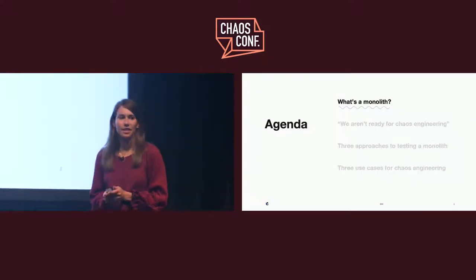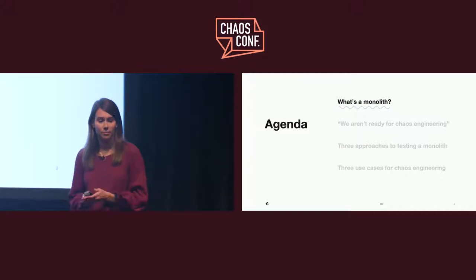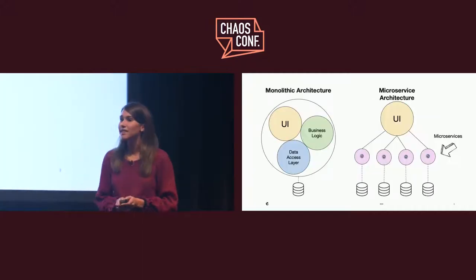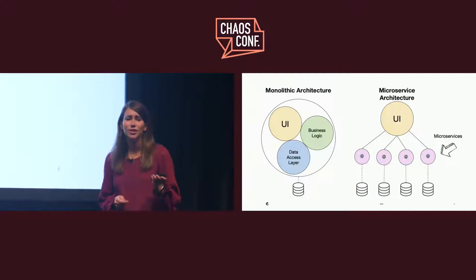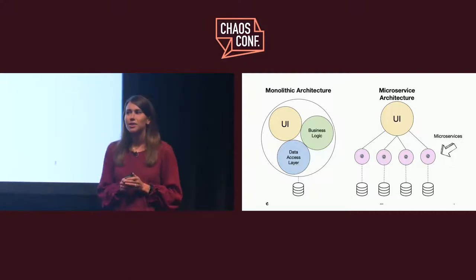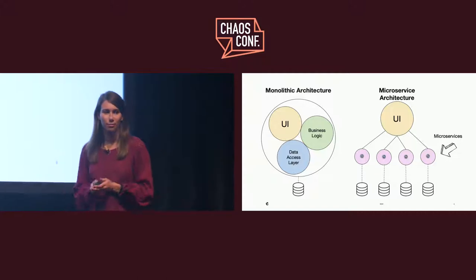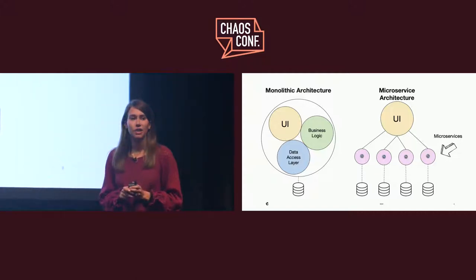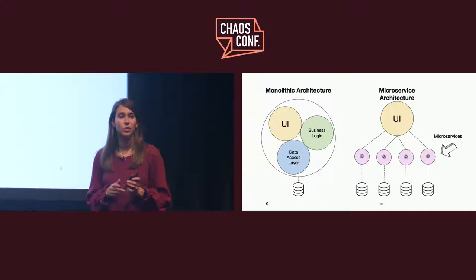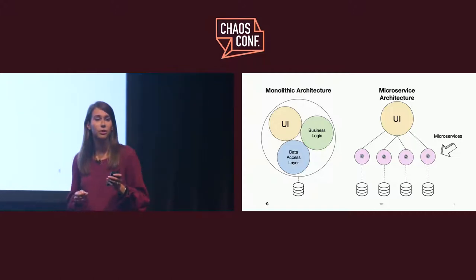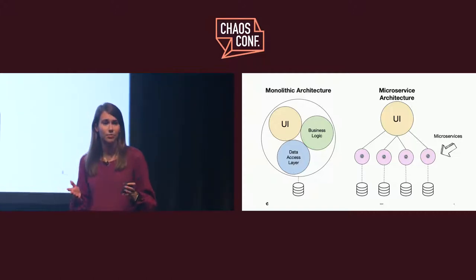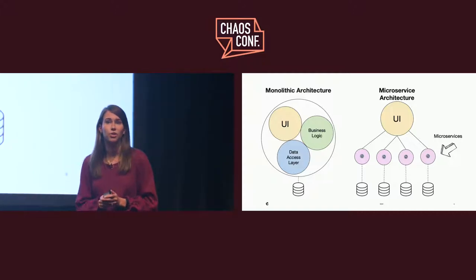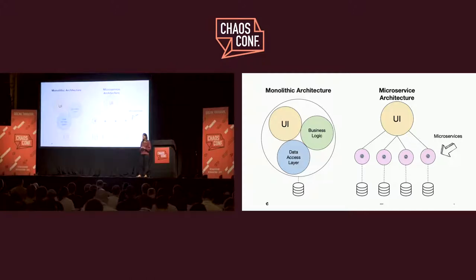So let's just start off on the same page — what's a monolith? A monolith is a traditional way of designing a system. They're easier to develop and get started with, but they can be less reliable and more complex. The idea behind microservices is that you're breaking your application up into different functional components that are frequently connected using APIs. And so one really common approach to chaos testing is to test the dependencies between those different microservices.